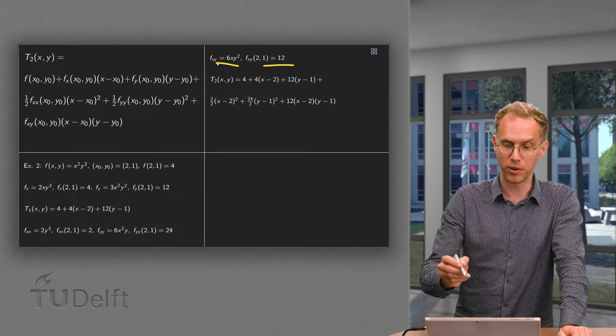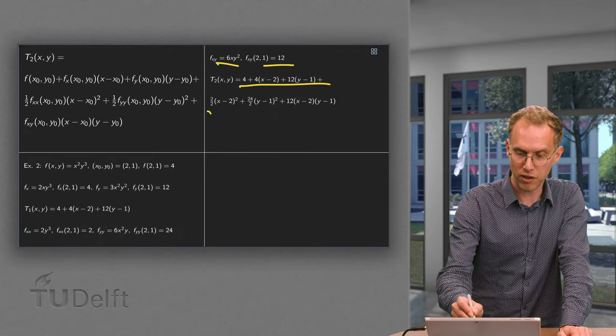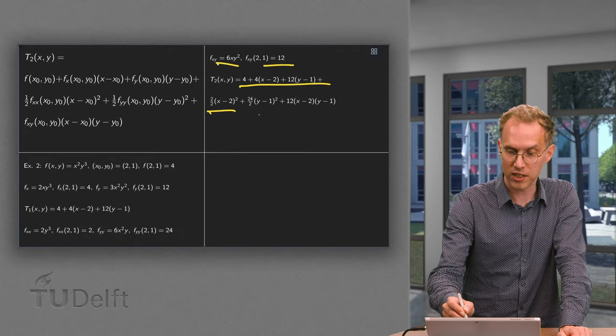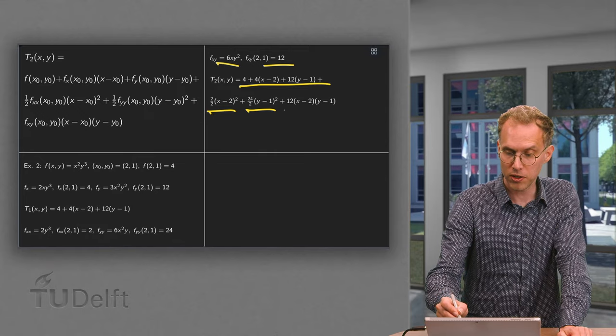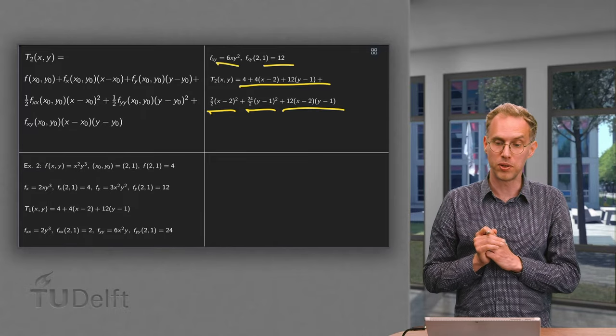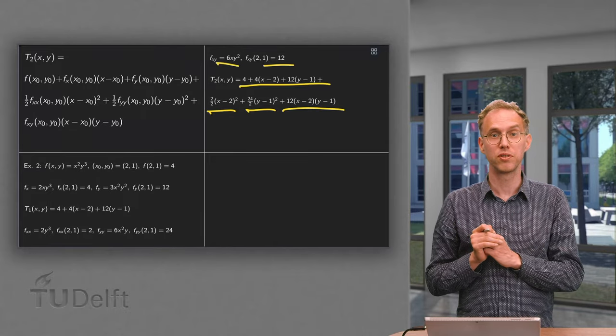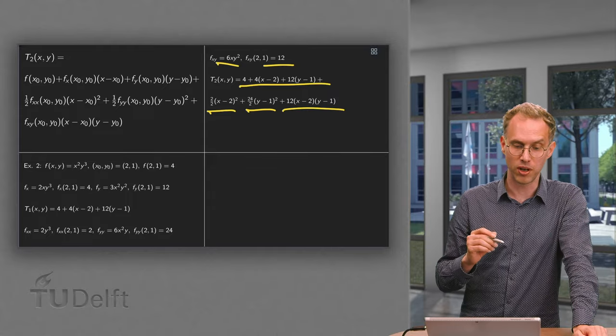So the second order Taylor polynomial equals the first one plus fxx over 2 times (x - 2) squared plus fyy over 2 times (y - 1) squared plus fxy times (x - 2) times (y - 1). So this is how we compute Taylor polynomials for functions of more variables. One important thing to note.